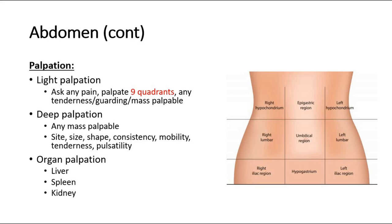Perform light palpation across the nine quadrants and feel for any tenderness, guarding, or palpable mass. After light palpation, proceed to deep palpation and also check for any palpable mass. If there is any mass, describe the site, size, shape, consistency (whether firm, cystic, or hard), mobility (whether mobile or not), tenderness, and pulsatility if indicated.